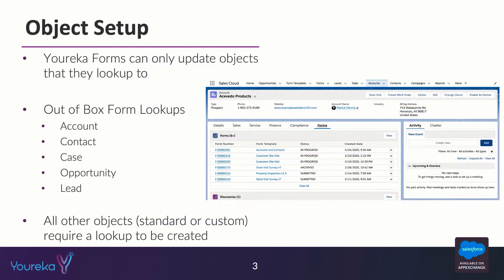But how does it work? Eureka forms can only update objects that they look up to. Field links only work if we have a lookup relationship from forms — which is its own object in Salesforce — to, in this case, accounts. We have a relationship between the form object and the account object, and we have our account with a related list of all the different forms for that specific account.